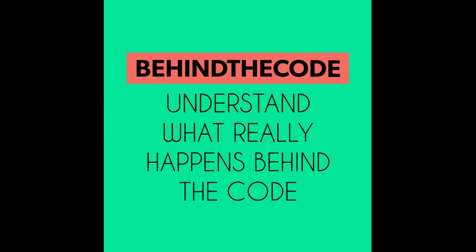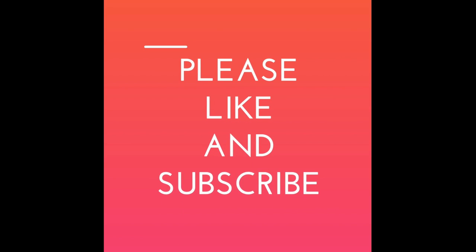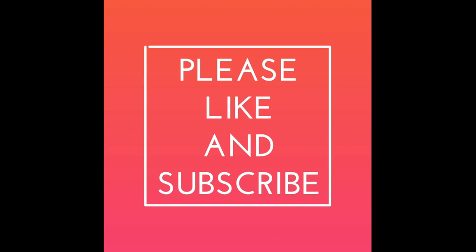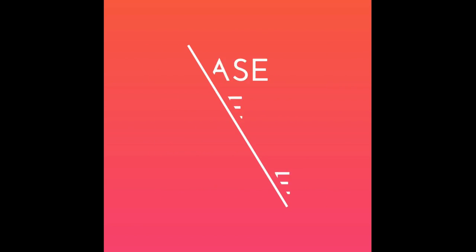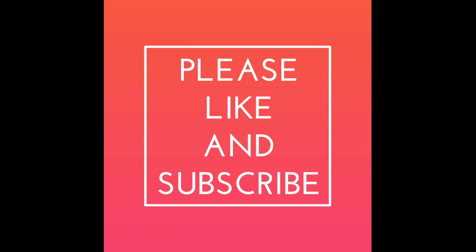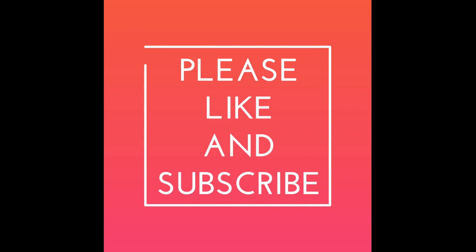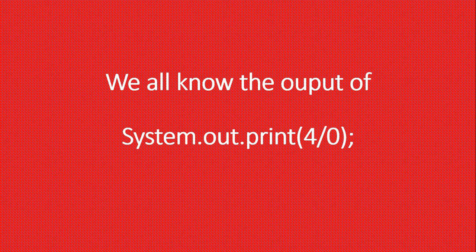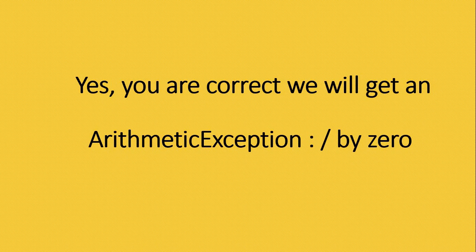Let's go to our video. Most of us know operators in Java and we use operators a lot, but most of us don't know a lot of concepts related to a particular operator in Java. So in this video I am going to show you some interesting concepts related to operators in Java. Most of us know the output of System.out.print(4/0) — yes, the output will be an ArithmeticException. In Java, division by zero is not allowed.